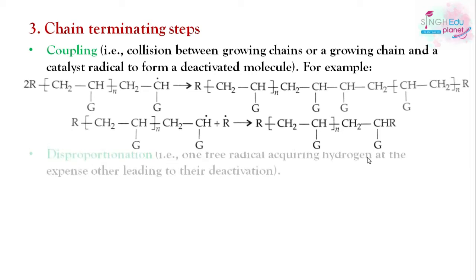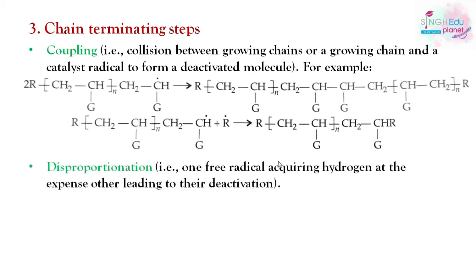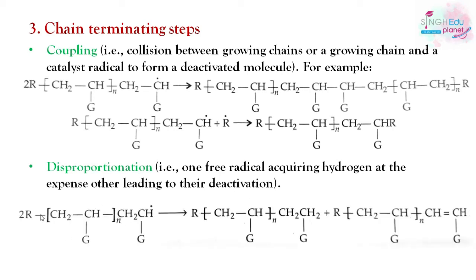The second termination mechanism is disproportionation. One free radical that has a hydrogen atom transfers that hydrogen to the other radical. One radical is deactivated by gaining a hydrogen, while the other radical becomes deactivated by forming a carbon-carbon double bond at its end.